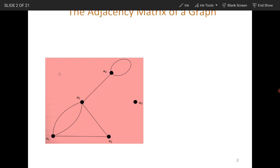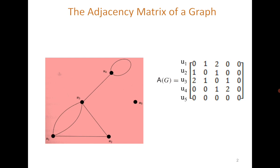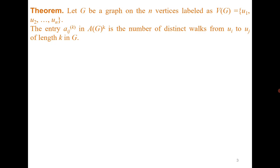We begin with the adjacency matrix. The adjacency matrix represents the adjacency relation between every pair of vertices. For a simple undirected graph, the adjacency matrix is a 0-1 symmetric matrix. In case of loops or multiple edges, the entries are greater than 1.